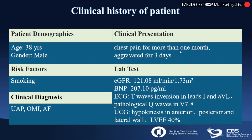Clinical diagnosis is unstable angina, old myocardial infarction, and atrial fibrillation. EGFR is normal. BNP is 207.1 pg per milliliter. ECG shows T-wave inversion in leads I and AVL. Pathological Q-waves in V7 to V8. Ultrasound shows hypokinesis in anterior, posterior, and lateral wall. Ejection fraction was 40%. Forty days ago, the first angiography was performed for this patient.